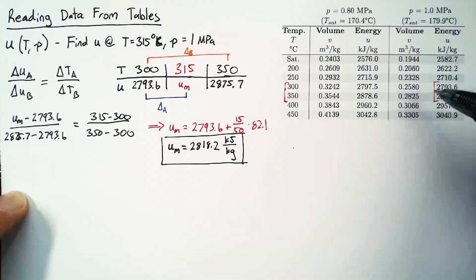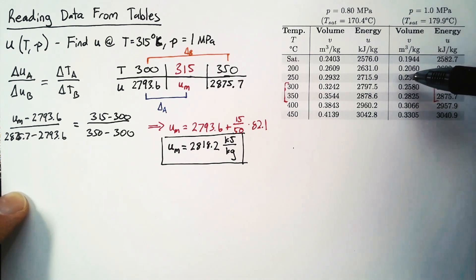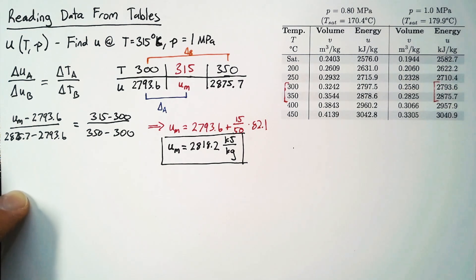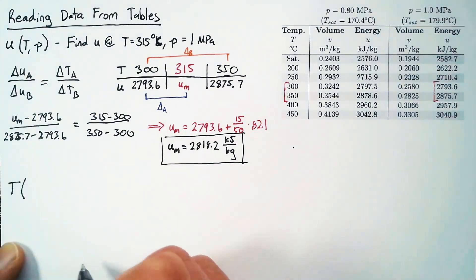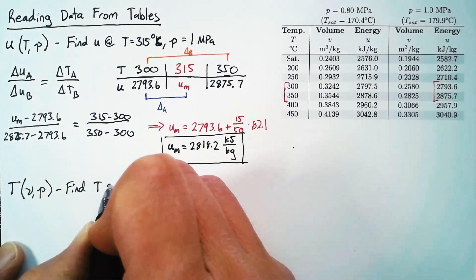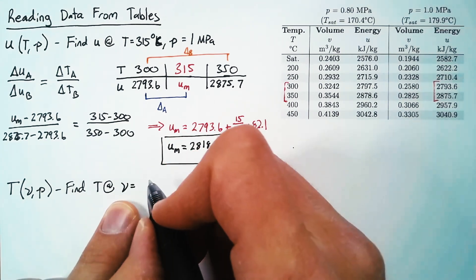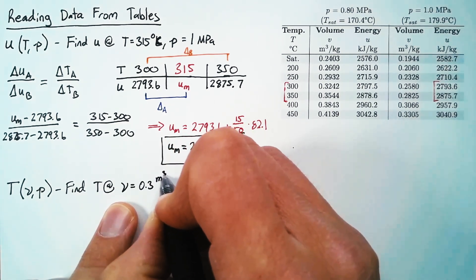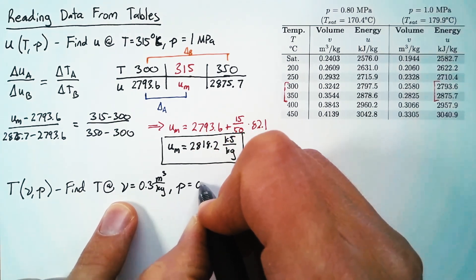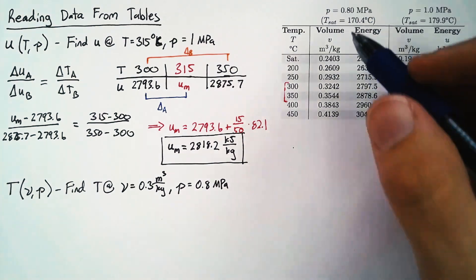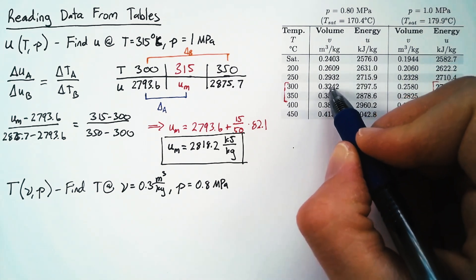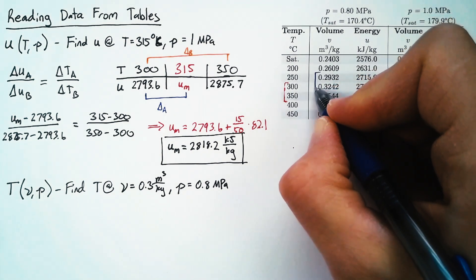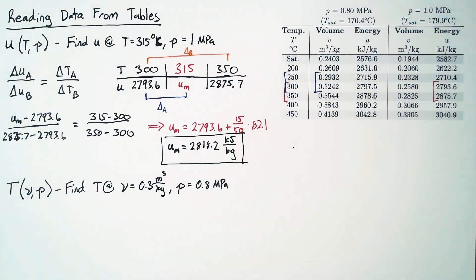This is one way of using the data. Another approach is using pressure and specific volume to find temperature. We can use any two values to find any third value. Here, we're finding the temperature when specific volume is 0.3 meters cubed per kilogram and pressure is 0.8 megapascals. Reading from the 0.8 MPa table, the value 0.3 falls between two data points.